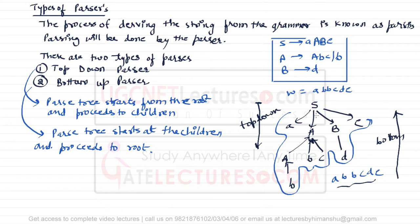There is a challenge with both parsers. For the top-down parser, if there are multiple choices (productions) for a variable, it is difficult to decide which choice to select. Similarly, the bottom-up parser has to decide which of the multiple choices to reduce back to.